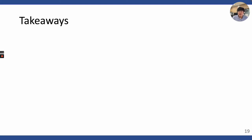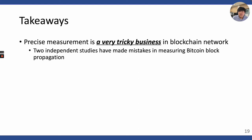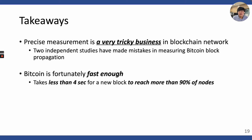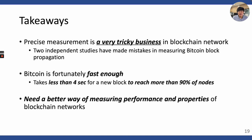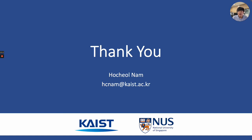Here are our takeaways. First, precise measurement is a very tricky business in blockchains — we found that two independent studies made mistakes in measuring Bitcoin block propagation. Second, fortunately, Bitcoin is fast enough: in our measurement, it takes less than 4 seconds for a new block to reach more than 90% of nodes, which is quite comforting news. Finally, we argue that we really need a better way of measuring blockchain network performance, and we'll leave that for our future work. Thank you for listening — if you have any questions or comments, please contact me.